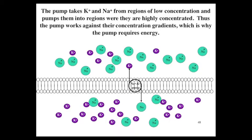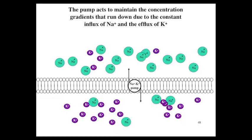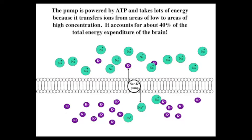The pump takes potassium and sodium from regions of low concentration and pumps them into regions where they are highly concentrated. Thus, the pump works against their concentration gradients, which is why the pump requires energy. The pump acts to maintain the concentration gradients that run down due to the constant influx of sodium and the efflux of potassium.